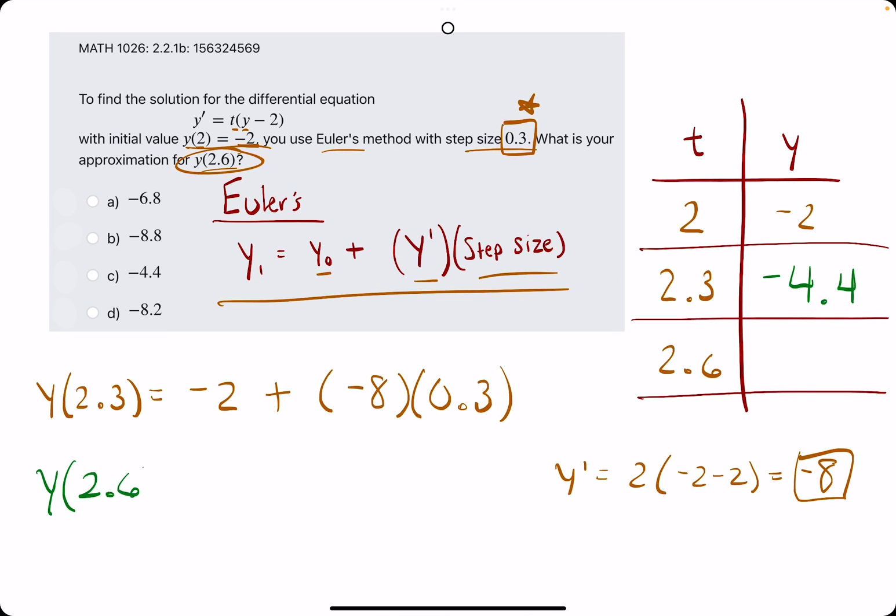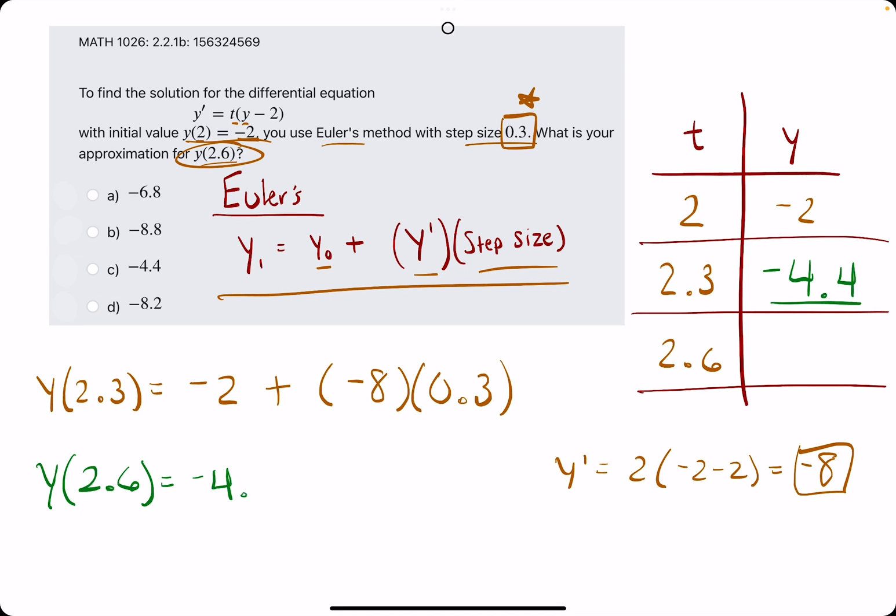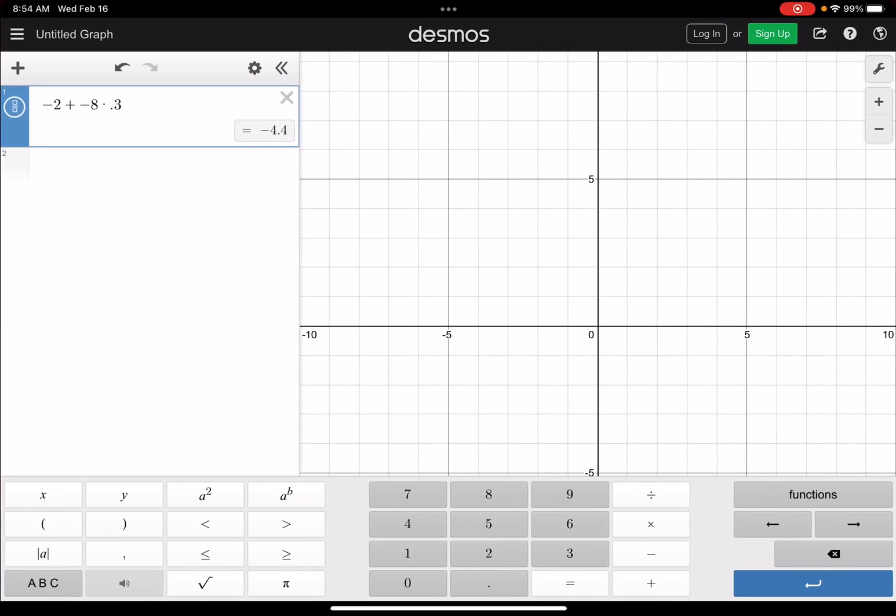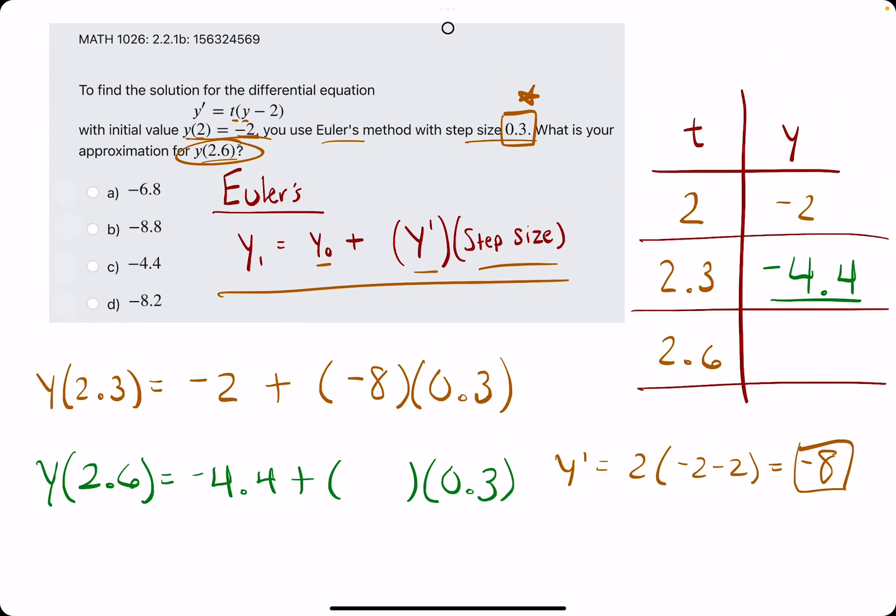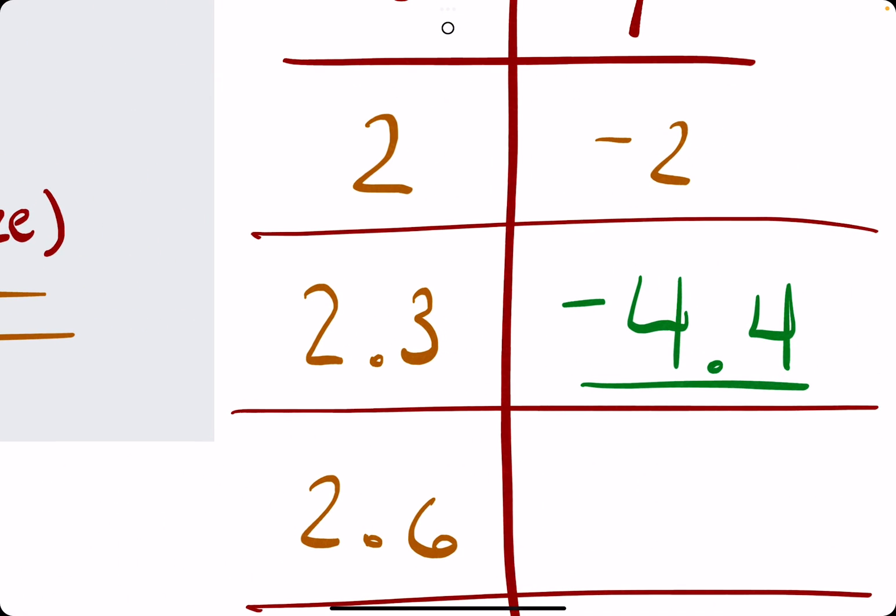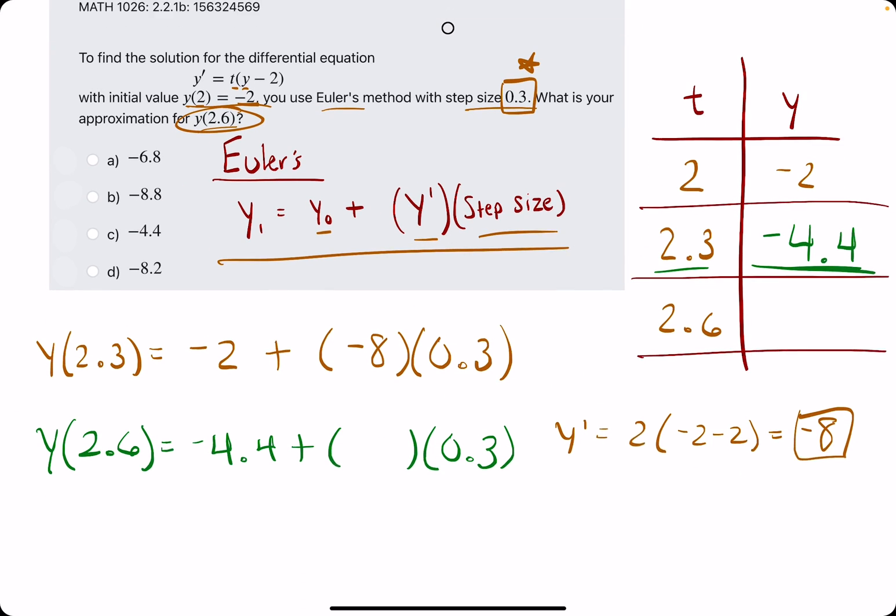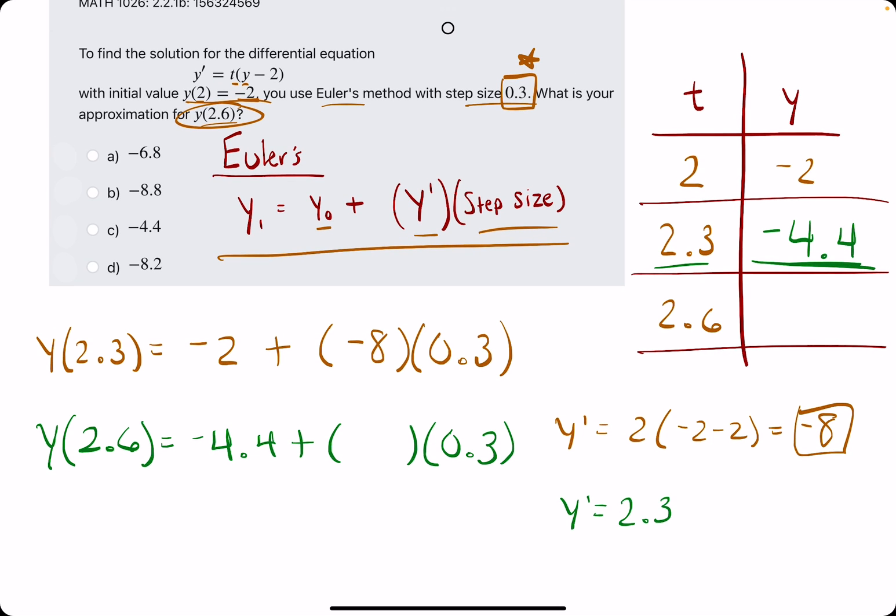Next y value we are approximating will be the y value at 2.6. Again, we take the previous y value, the one we just found, negative 4.4, and we are adding y prime, which we have to recalculate. However, the step size will remain the same, it's still 0.3. But again, the reason we need a new y prime value is because now we want to use this t value and this y value in y prime. So y prime is t, so 2.3, times y, which is negative 4.4, minus 2.